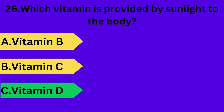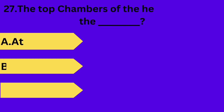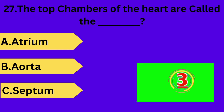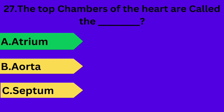And next question is: the top chambers of the heart are called the what? Option A: atrium. Option B: aorta. Option C: septum. Your time starts now. Answer is option A: atrium.